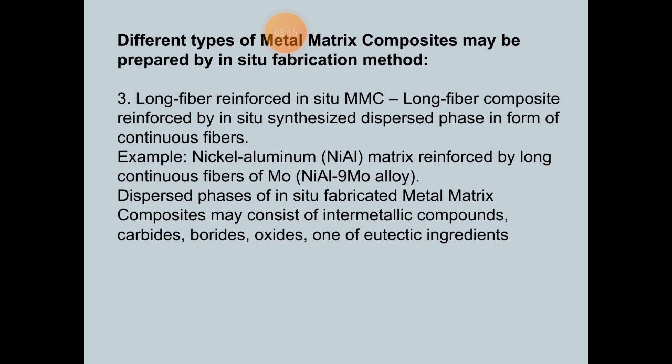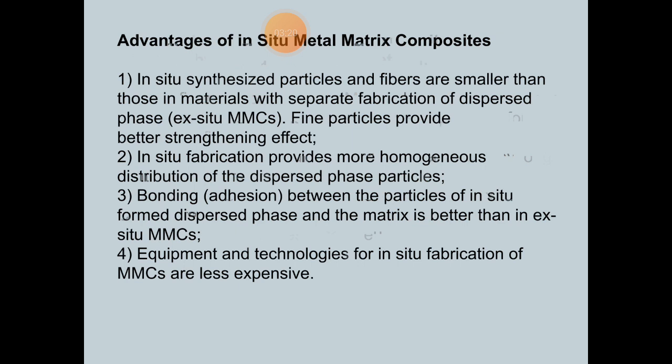The dispersed phase of in-situ fabricated metal matrix composites may consist of intermetallic compounds, carbides, borides, or oxides — one of the eutectic constituent ingredients. Turning to the advantages of in-situ metal matrix composites: first, in-situ synthesized particles and fibers are smaller than those produced in separate fabrications of the dispersed phase, as seen in ex-situ MMCs.